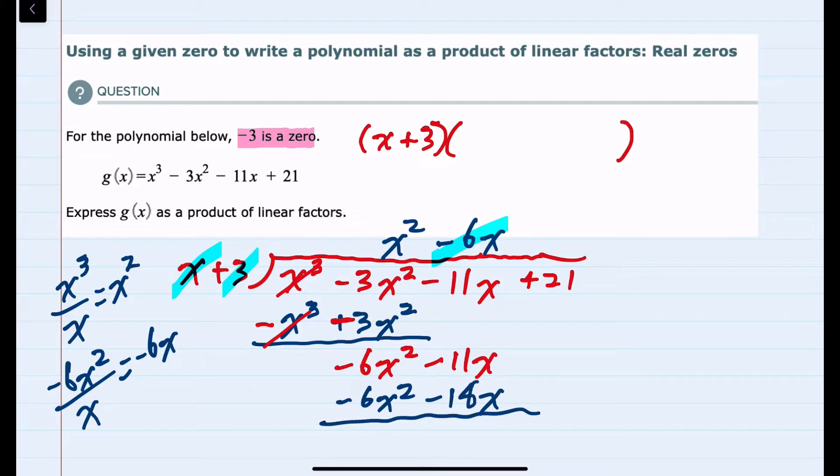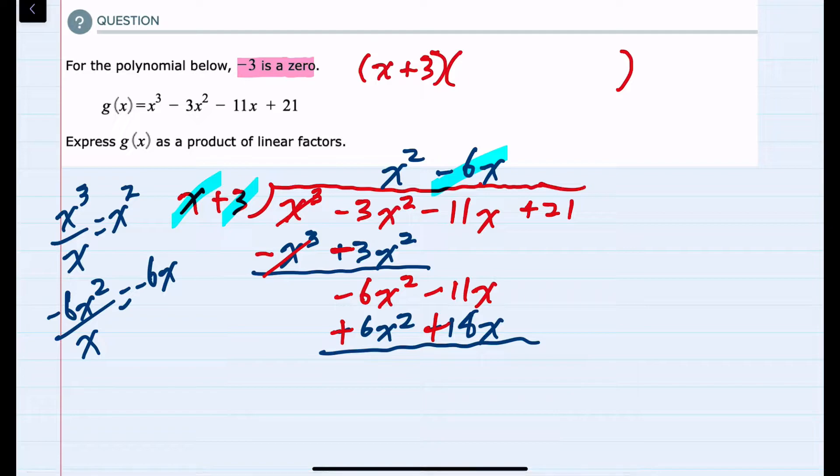And to subtract, I'll again change the signs. This time they both become positive and add. The first terms again cancel. Negative 11x plus 18x gives me a positive 7x. Bring down the last term, the plus 21.